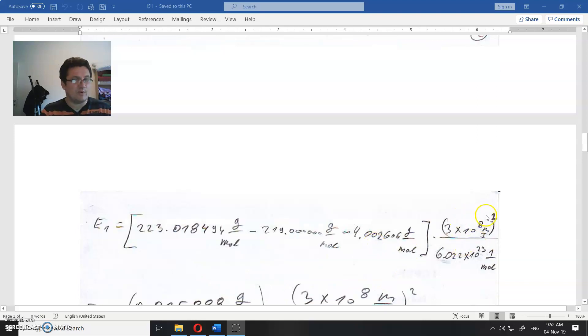This is the speed of light squared—that's the relation between energy and mass, E equals mc squared. This is mass per mole, and this is the number of particles inside one mole, Avogadro's number.